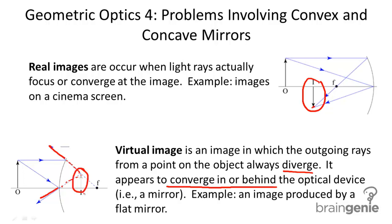That's why we call this a virtual image. An example is provided here, this image where it appears to be virtual. The light rays are not actually converging on the image. They only appear to converge behind or in the device. So in this case, a concave mirror.